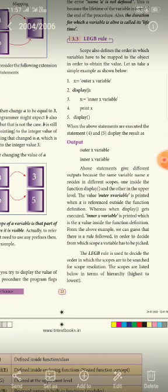How to run the program? Print x is called. First line is called, x equal to outer x variable. Output is called. First print x is called. Outer x variable is called.